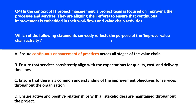This question is about reflecting the purpose of the 'improve' value chain activity. Option A says ensure continuous enhancement of practices across all stages of the value chain — this is the essence of continuous improvement, ensuring that practices evolve for better efficiency, quality, and alignment with organizational objectives. We'll park this. Option B says ensure that services consistently align with the expectations for quality, cost, and delivery timelines.